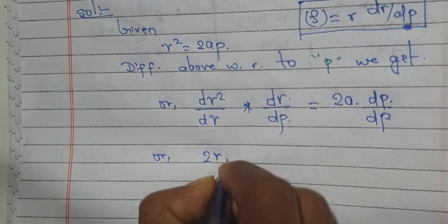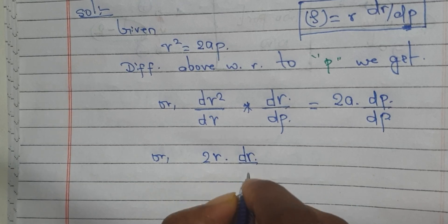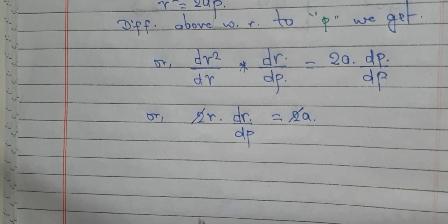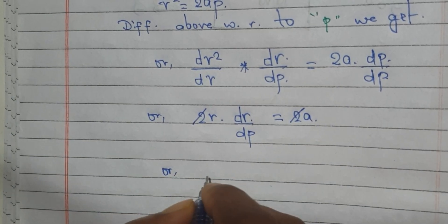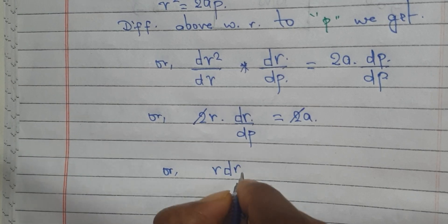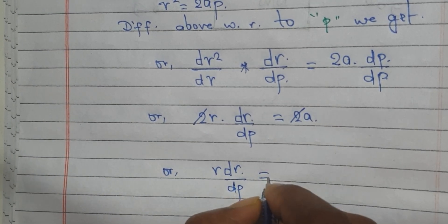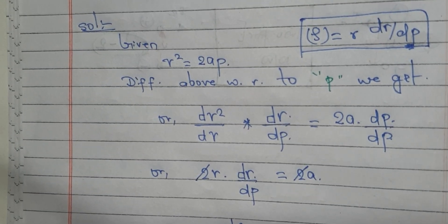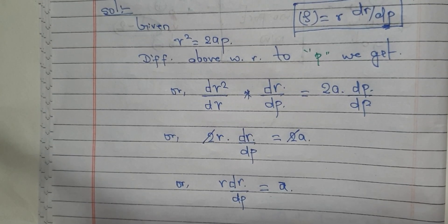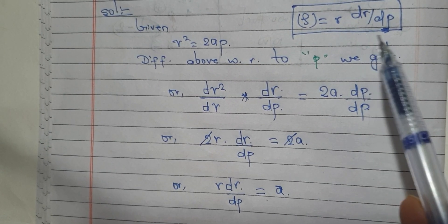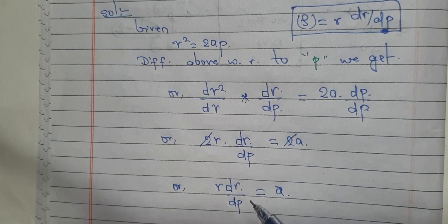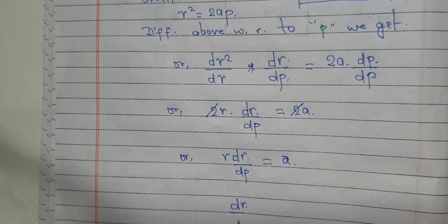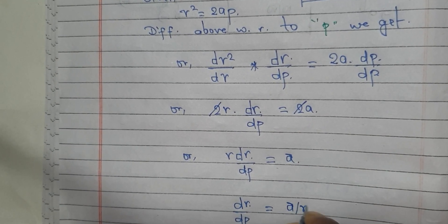So 2r·dr/dp equals 2a, which gives us r·dr/dp equals a. Therefore, dr/dp equals a/r.